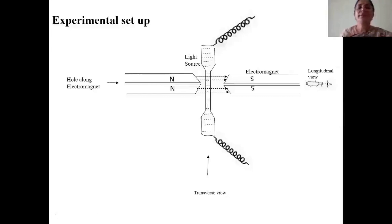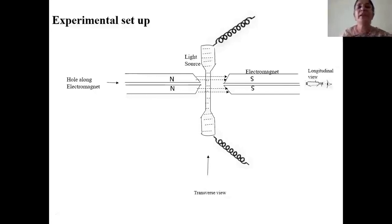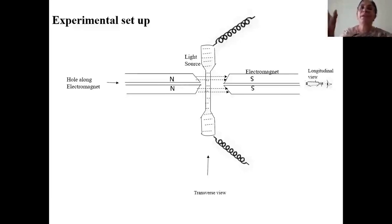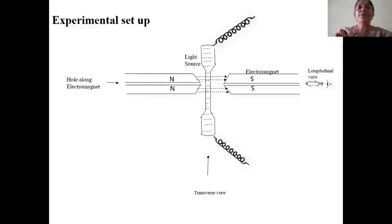Let us now discuss the experimental setup. Zeeman chose a light source giving out line spectra. In our lab we use a sodium vapour lamp or mercury vapour lamp. Using a grating or prism, you can observe the spectrum. For a mercury vapour lamp the spectrum has seven colours, and for a sodium vapour lamp you see only two lines.